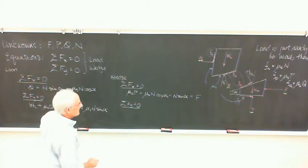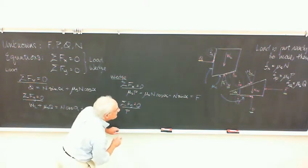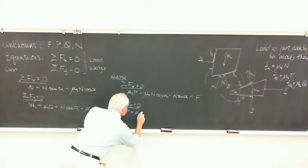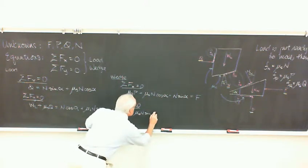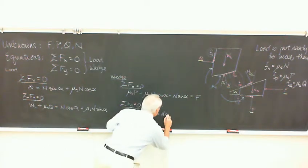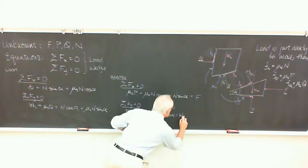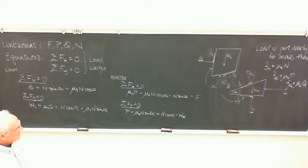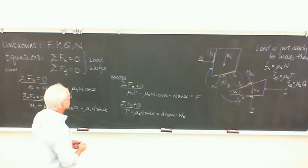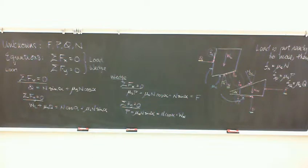And then in the Y direction, we've got P up, a little bit of the friction force on the N face up, which would be sine alpha. And then that equals all the down forces, N cosine alpha, plus the weight of the wedge. And is that it? That's it. We've got, we only have four forces with any vertical component, so that would be it there. Okay.